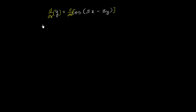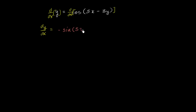On the left-hand side, we get dy/dx. On the right-hand side, we're going to apply the chain rule. The derivative of the cosine of something with respect to that something is going to be equal to negative sine of that something — so negative sine of 5x minus 3y. And then we have to multiply that by the derivative of that something with respect to x.